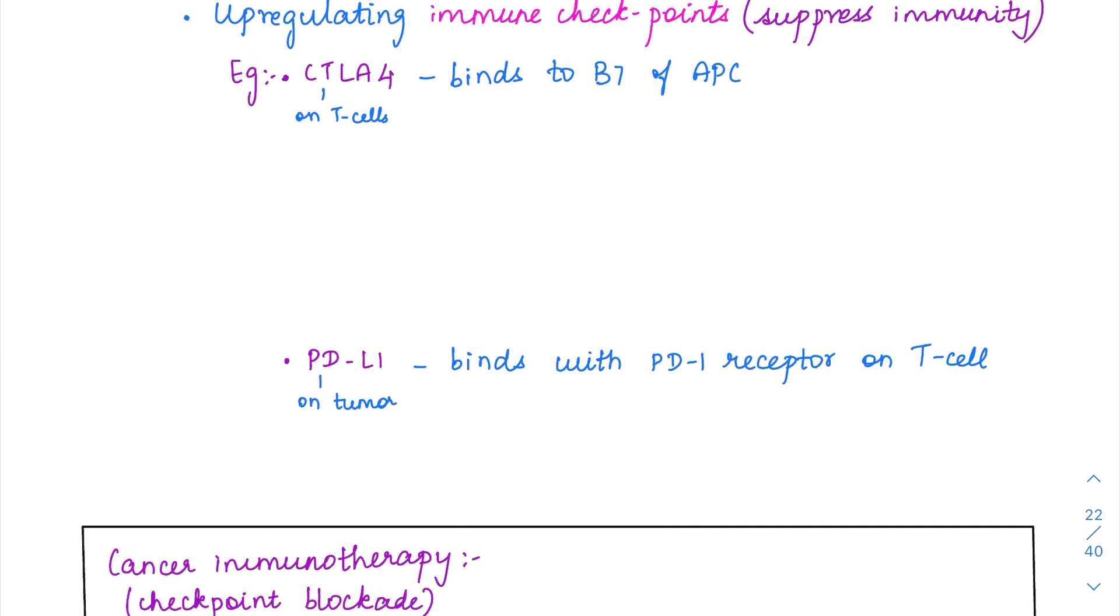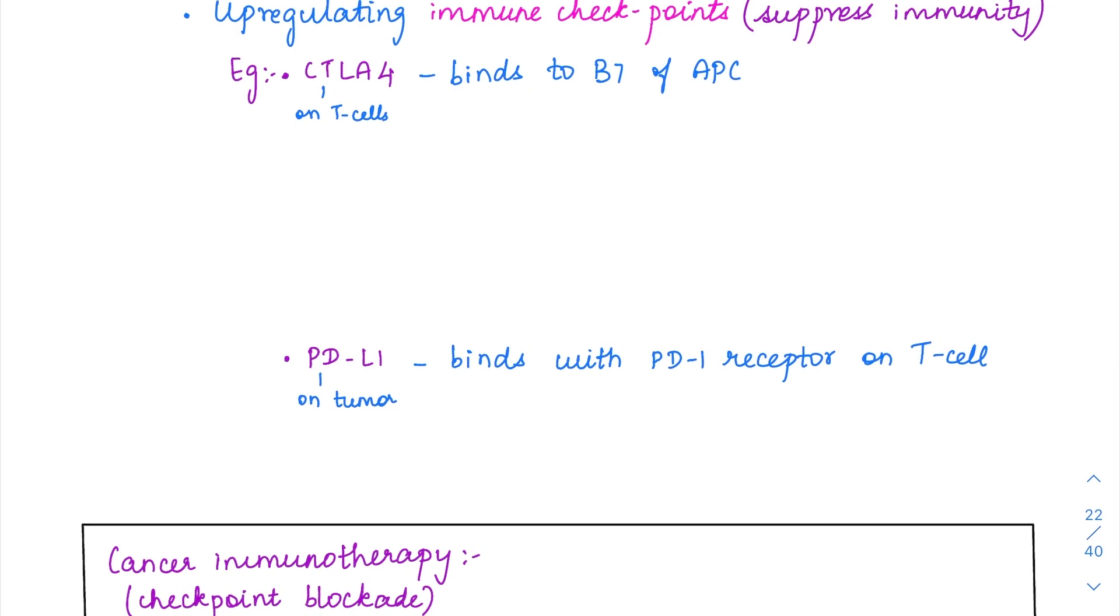Normally the CTLA-4 is going to be present on the T cells. This CTLA-4 is going to bind with the B7 protein of antigen presenting cells. So this B7 is nothing but CD80 or 86. Normally in a normal T cell, the CD28 on T cells is going to react with the CD80 or 86 and this is the co-stimulatory signal needed for the T cell activation.